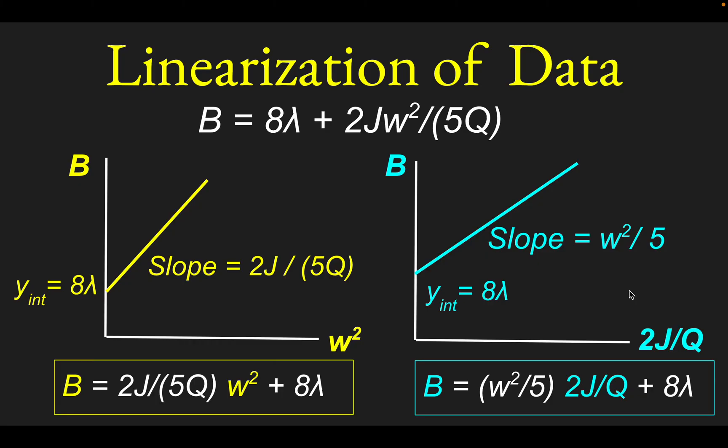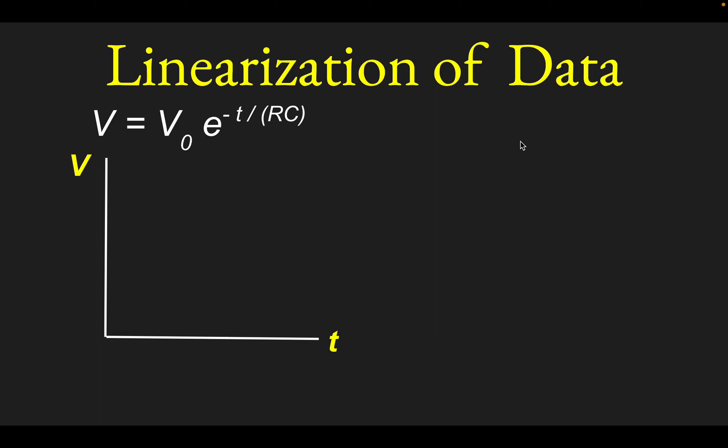So one final context that's good to know about this would be when you have some kind of an exponential dependence. So this is an example of like an exponential decay. This comes up, for instance, when you charge a capacitor and then let the capacitor discharge through some resistors in a circuit. And so the expected dependence is an exponential decay like this. So if you plotted the voltage, say, across the capacitor as a function of time, you would have this exponential decay type appearance. So clearly not linear.